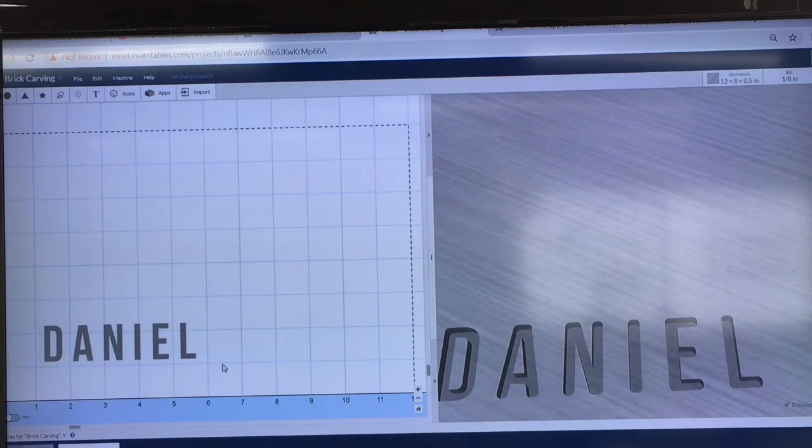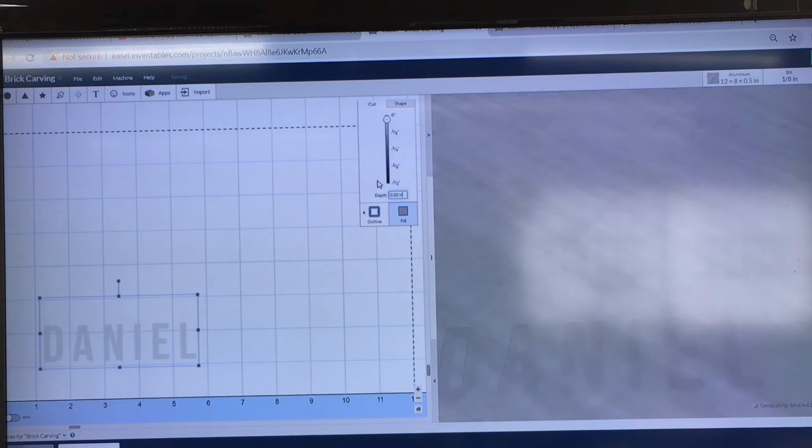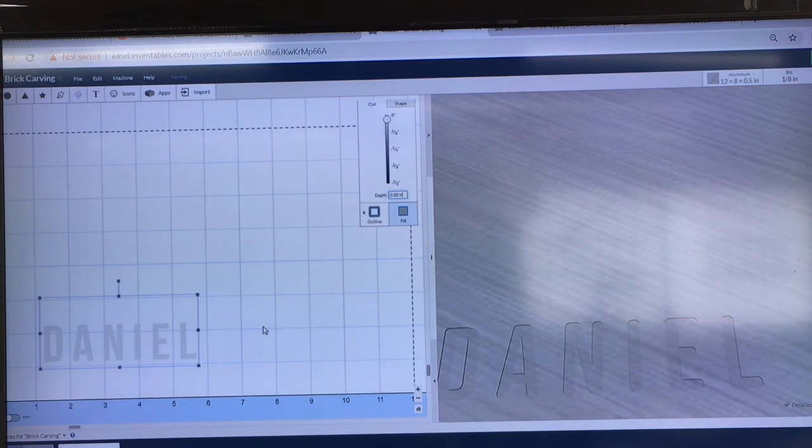There we go. Now we've got the letters spaced out. And I definitely don't want to cut them this deep. So we're going to go ahead and cut this, on this experiment, about three hundredths of an inch, a point zero three, so that's going to be a nice shallow cut.